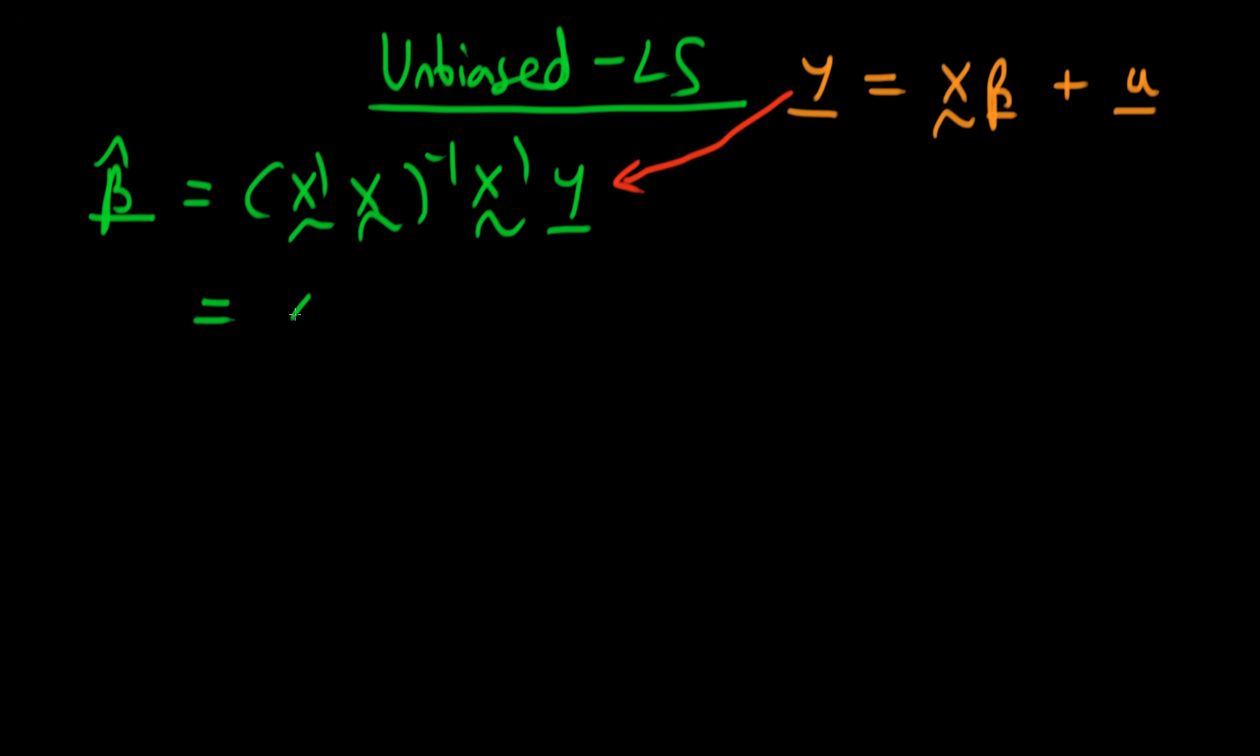So if we use that then we can write out the whole thing as x primed x to the power minus one times x primed and then substituting this thing in here I get for the first term x beta and then I get a second term which is just x primed x to the power minus one times x primed u.